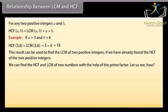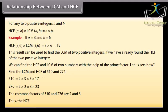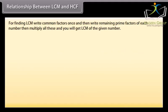Let us see how. Find the LCM and HCF of 510 and 276. 510 equals 2 into 3 into 5 into 17. 276 equals 2 into 2 into 3 into 23. The common factors of 510 and 276 are 2 and 3. Thus the HCF equals 2 into 3, which is 6.